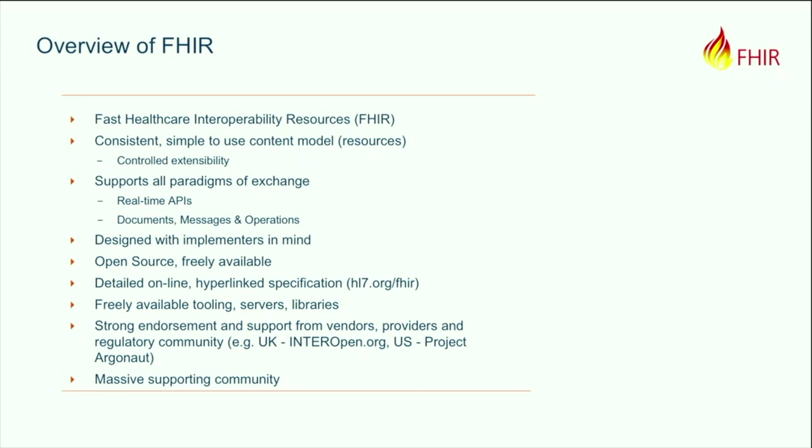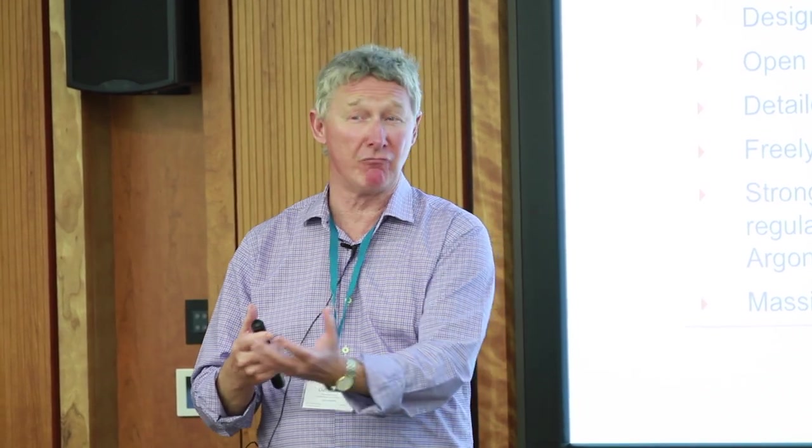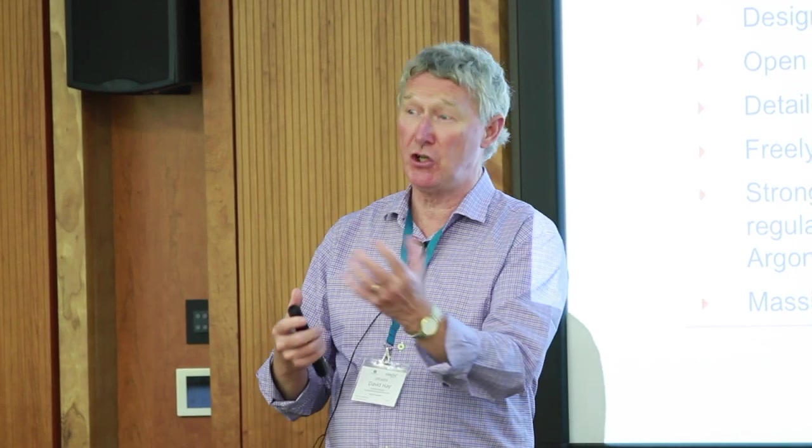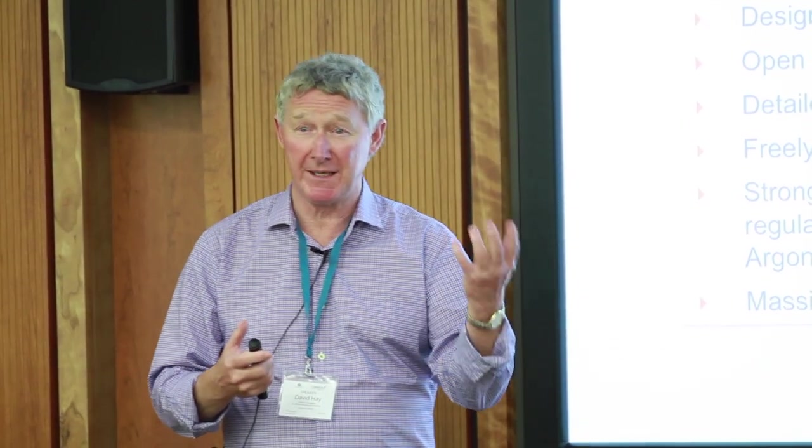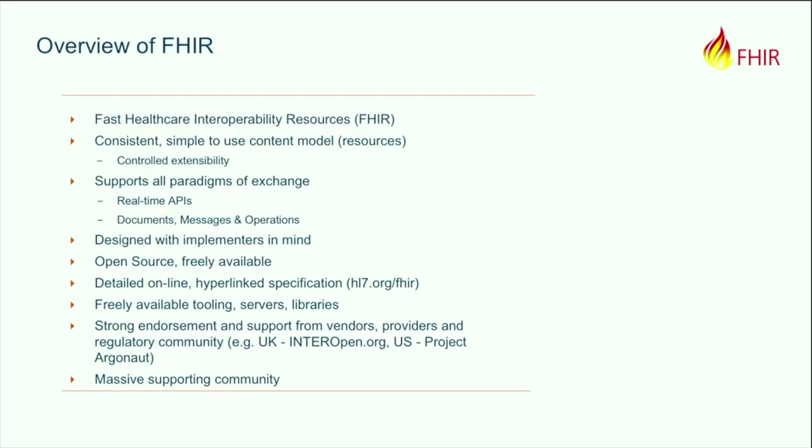The second key thing is these consistent, simple-to-use content models — with controlled extensibility. Back in the day we had the rule of 80%: a data element made its way into the core resource if it was already being used by 80% of systems. We were focusing on real-world interoperability, not what we believed should happen. For the latter, there are extensions. Extensions are a first-class member of FHIR — our expectation is that any real usage of FHIR will use extensions. You can think of extensions as being Z segments done right.